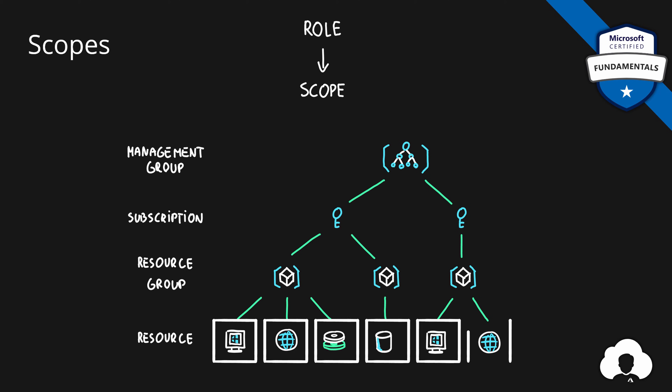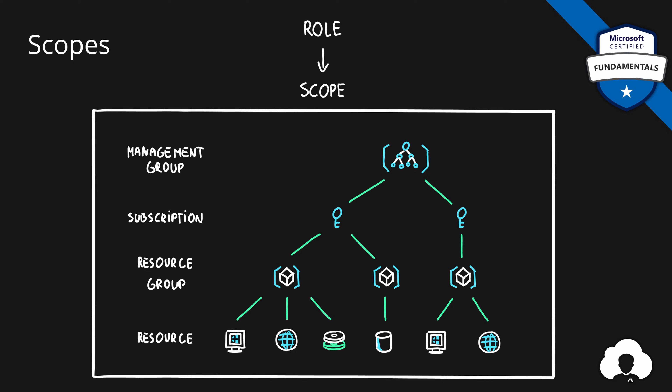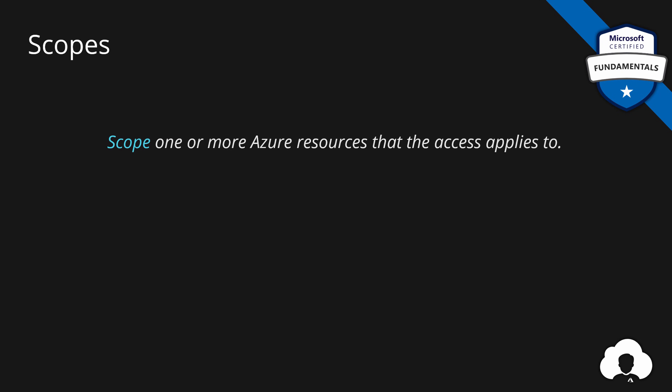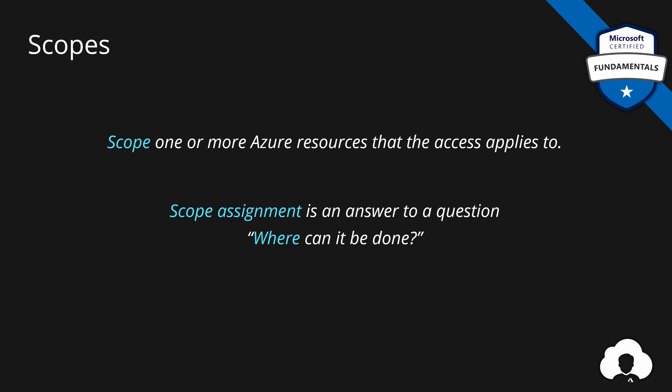So if you want, you can give someone access to only a specific virtual machine or a specific database. All of those are called scopes. A scope is simply one or more Azure resources that the access is applied to, and scope assignment answers the question: where can it be done?